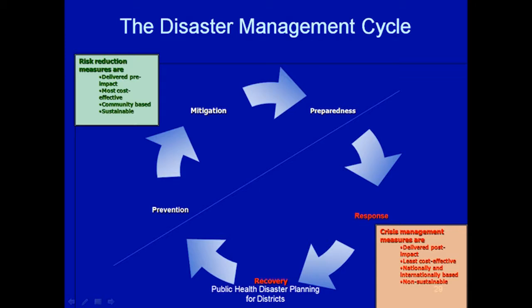When you talk of risk reduction measures, these are delivered pre-impact, meaning that you can do preparedness before a disaster occurs. You do mitigation before a disaster. You build dams to accommodate floods. You build gabions. You prevent the disaster by all means.